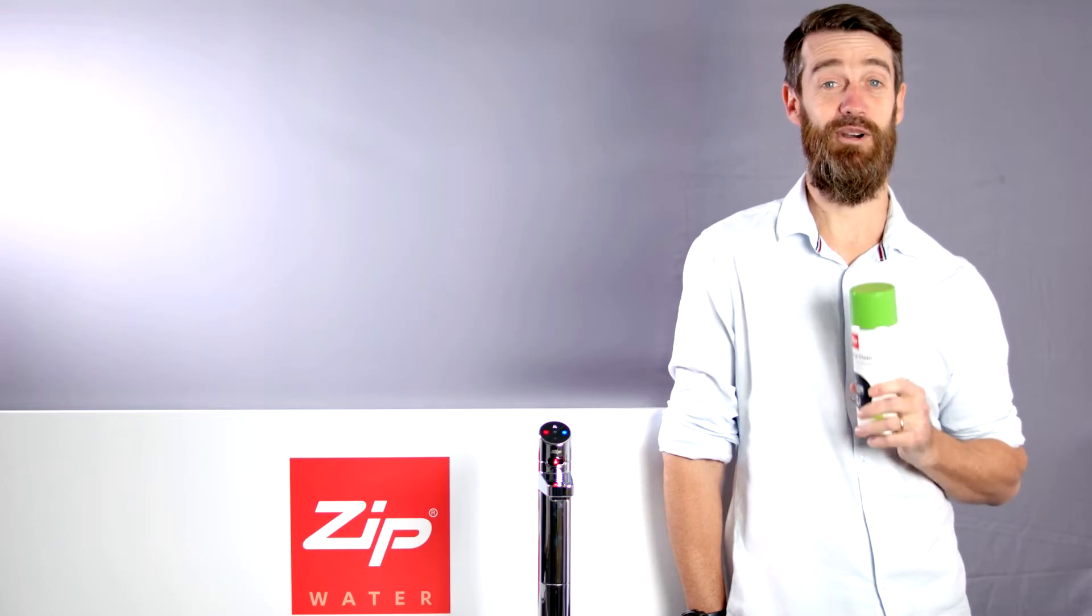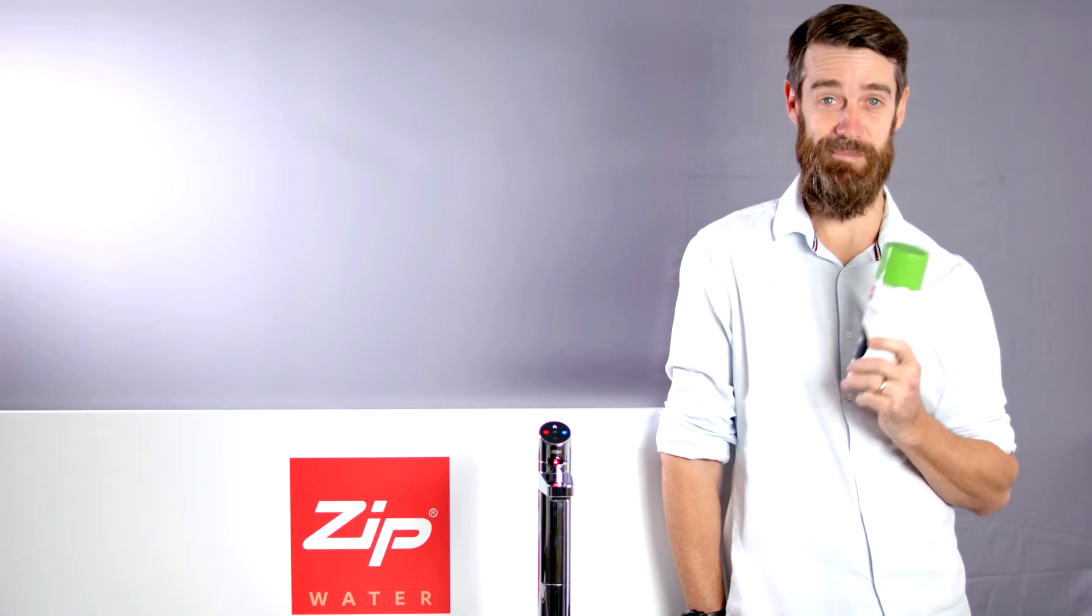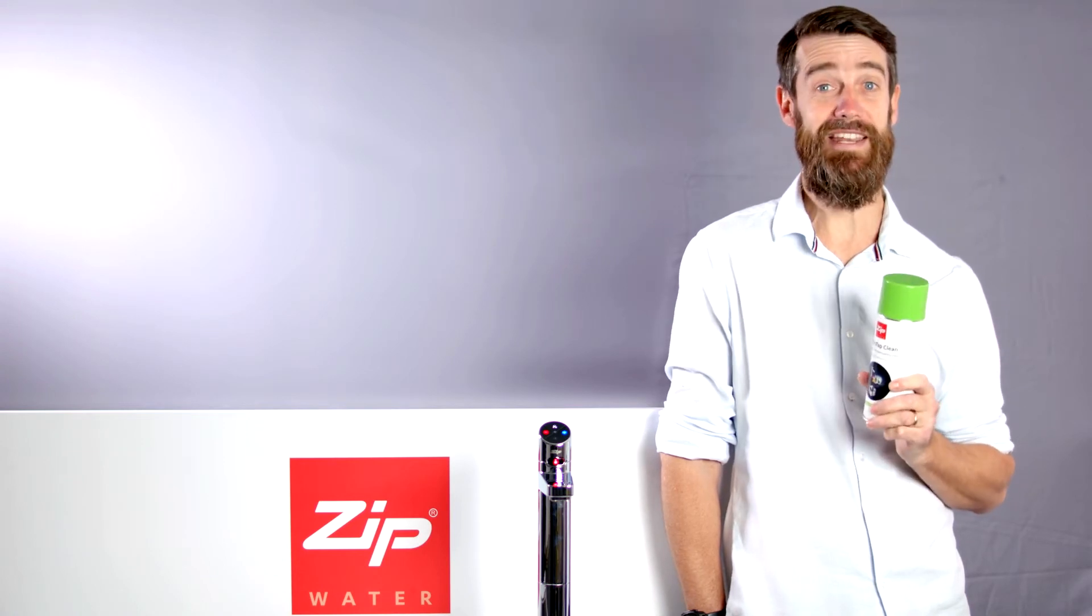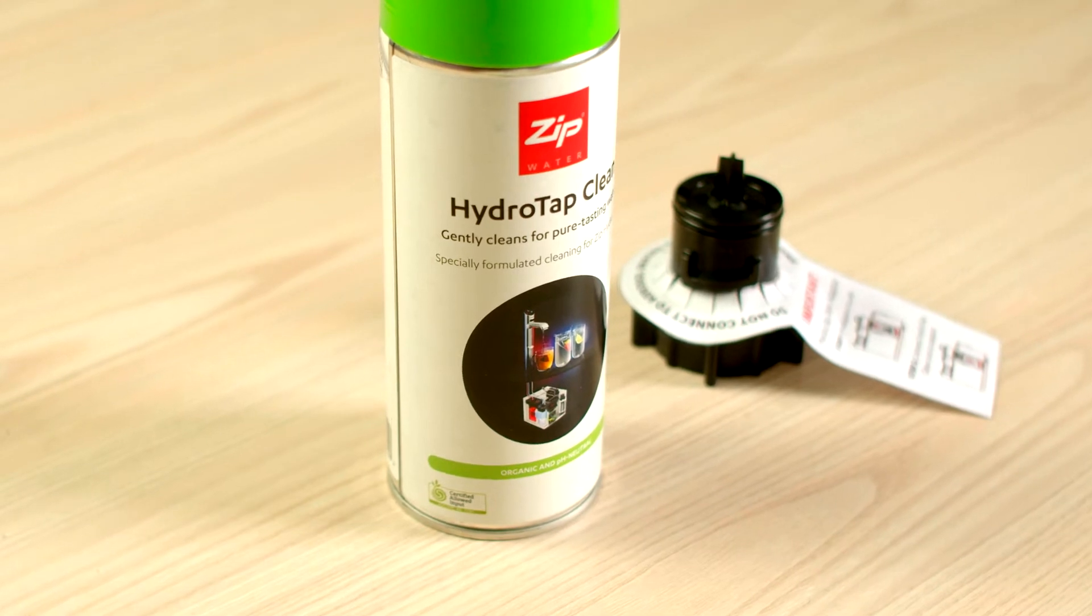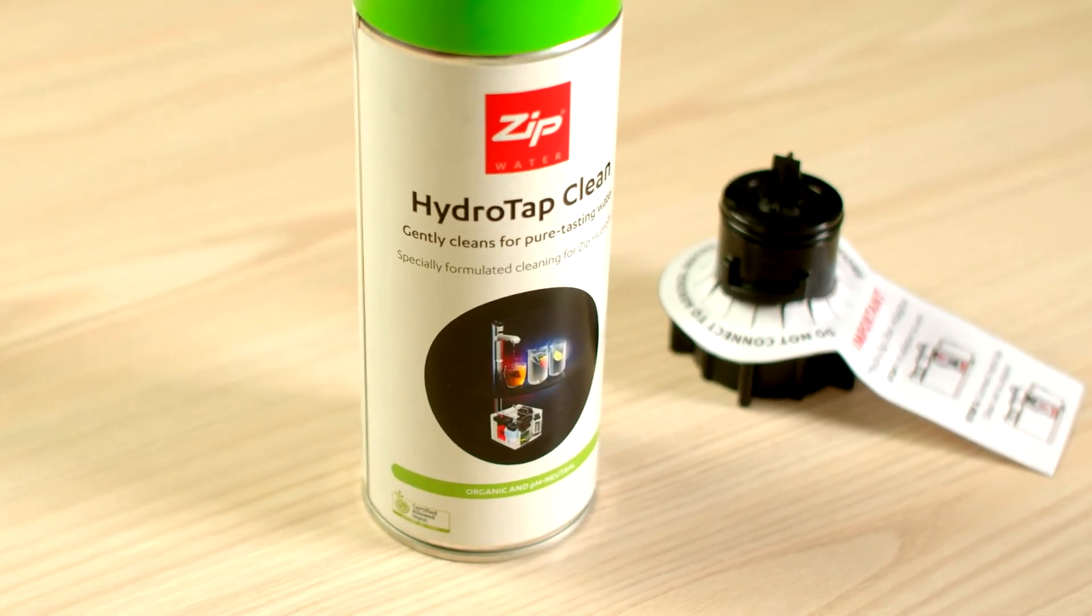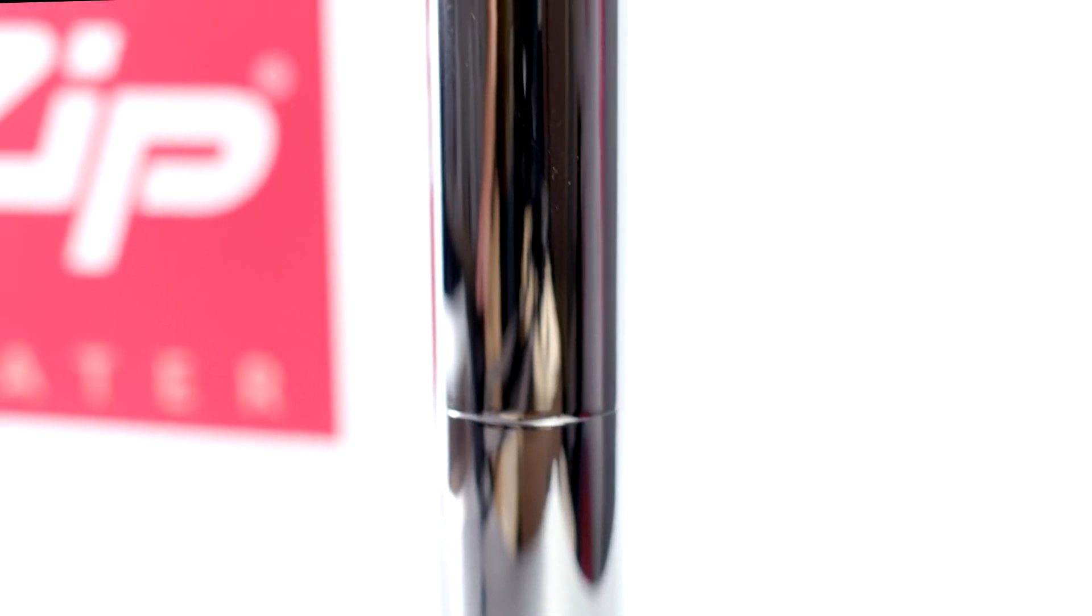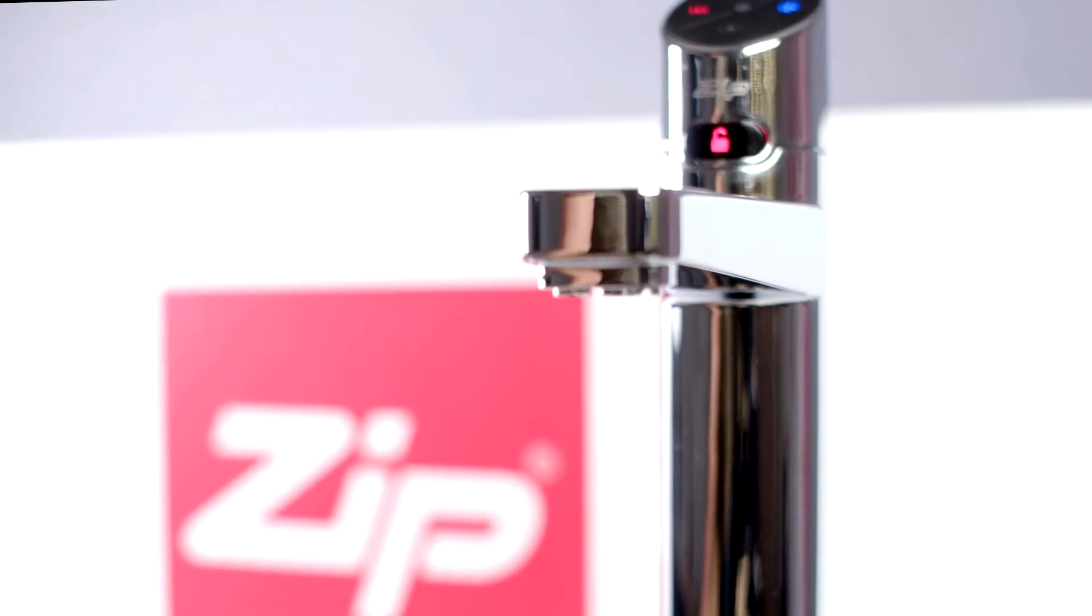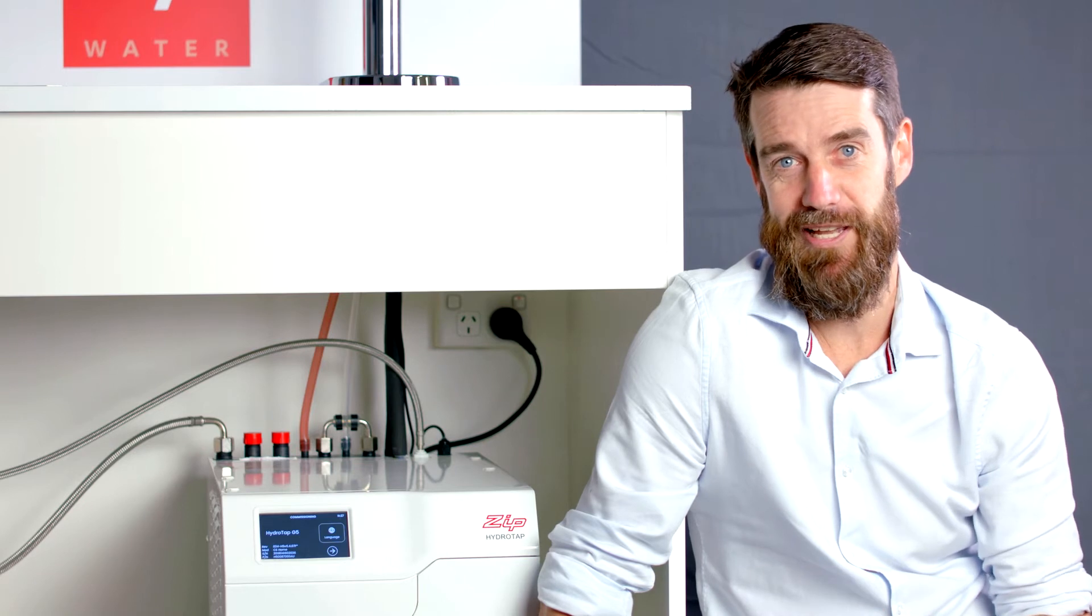An innovation from Zip Water is HydraTap Clean. HydraTap Clean is a naturally produced cleaning product that's gentle on surfaces and pH neutral. HydraTap Clean has been specially designed for HydraTap chilled and sparkling water paths. HydraTap Clean is to be used during the commissioning process of your HydraTap, which is the final step in installation.